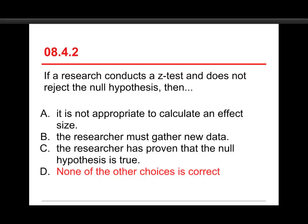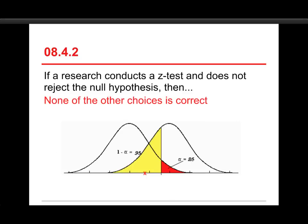The idea that it's not appropriate to calculate an effect size - no, you always calculate an effect size. That's a good thing to do. So the fact that the z-test is or is not statistically significant is irrelevant. A researcher must gather new data - well, that's for replication, or if you made a big mistake, then yes, but failing to reject the null hypothesis is not a mistake. It's just a fact about the sample data. And the researcher has proven that the null hypothesis is true? No. We don't prove that things are true. We can find exceptions and say that something's unlikely to happen, but we don't prove that the null is true. So the answer is that none of the others are correct.